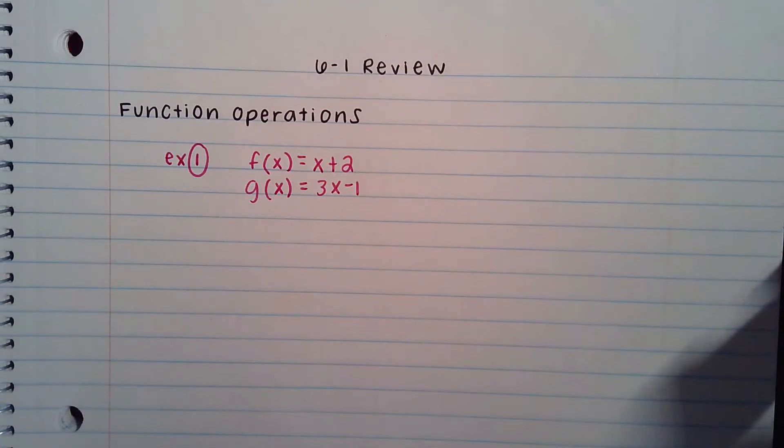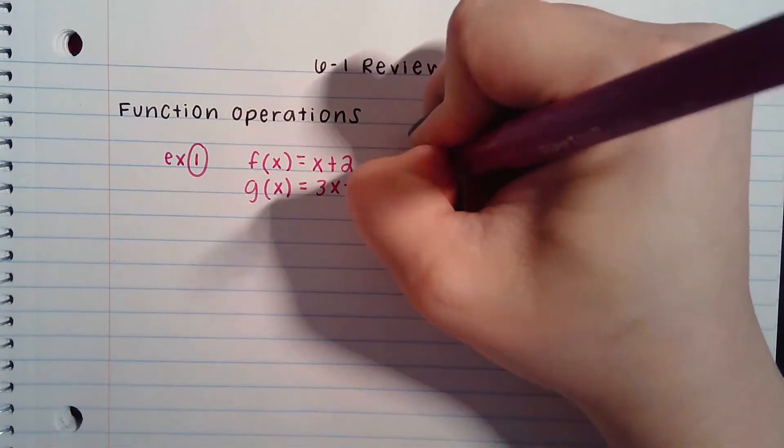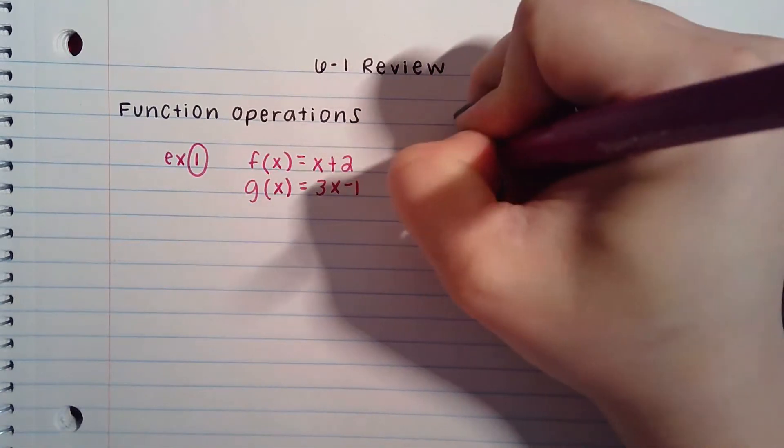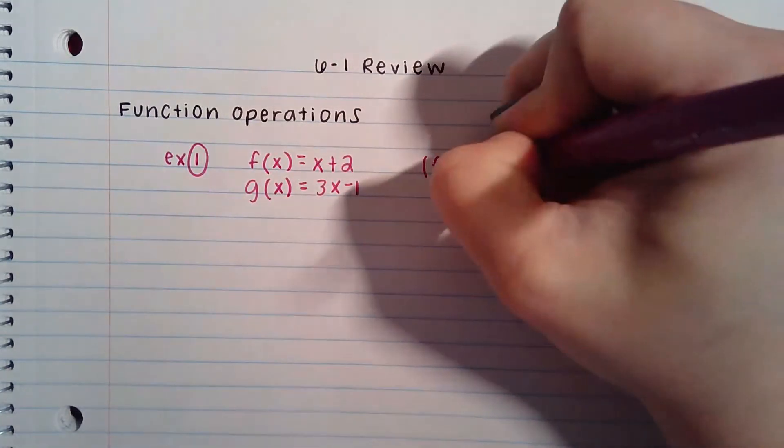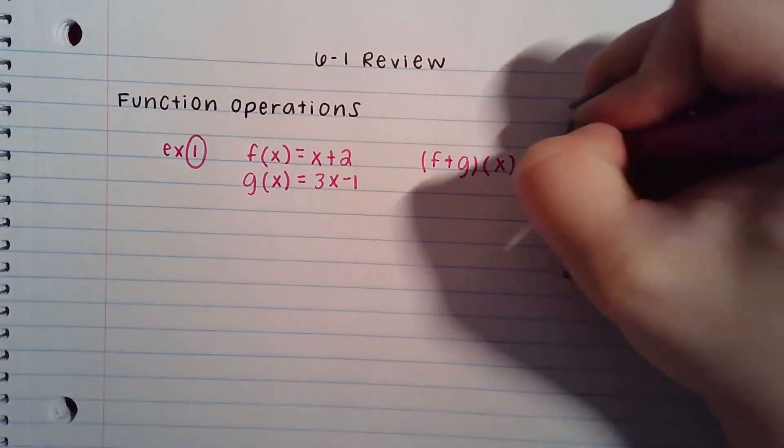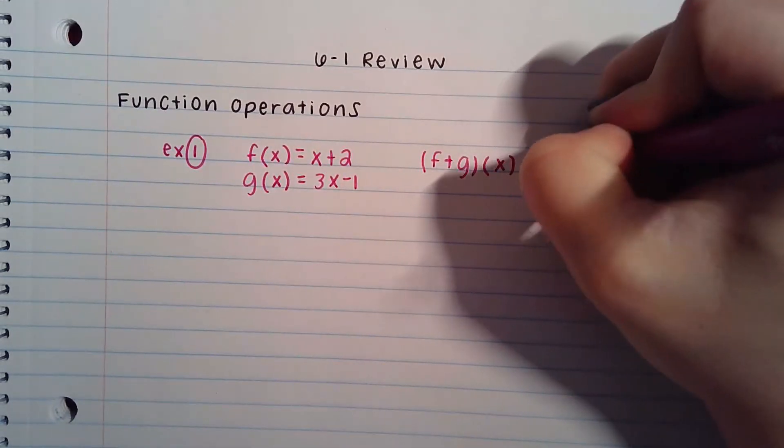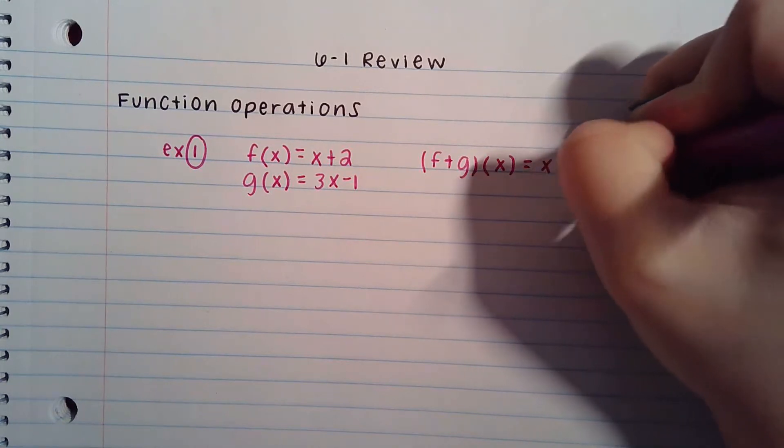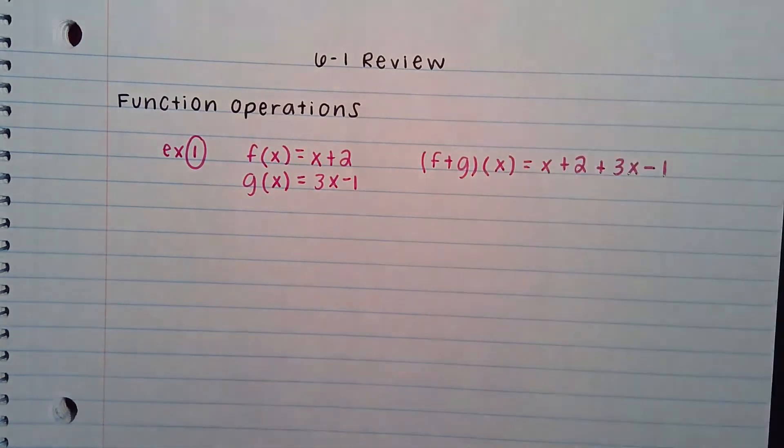We're going to go through all four operations with this one example. So let's start with adding. When we add them, it will look like (f+g)(x). That's what lets us know that we're putting them together with addition. You just need to add them. It is that simple. So put them together.